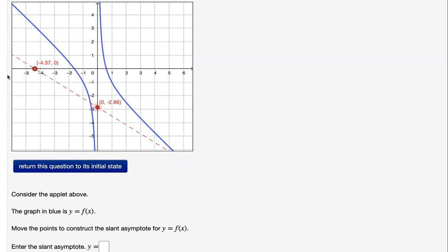And as x approaches negative infinity, same idea. The asymptote should get closer and closer to the curve.